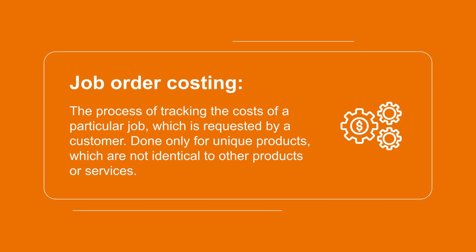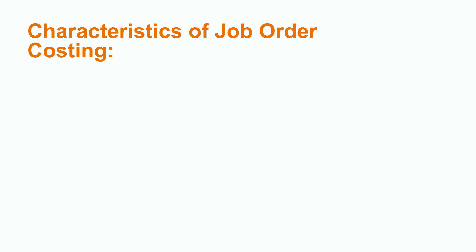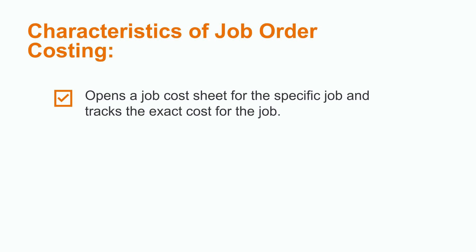Job order costing is done only for unique products which are not identical to other products or services. Manufacturers use this method to allocate costs like raw materials, labor, and manufacturing overheads to a particular job.